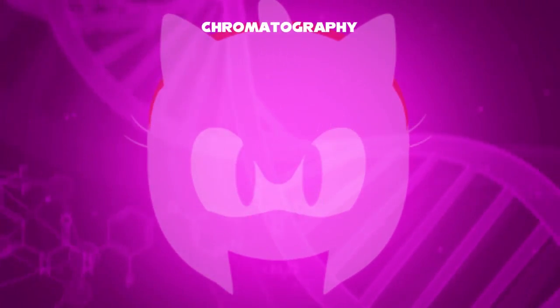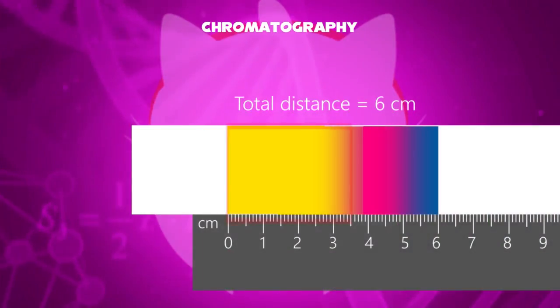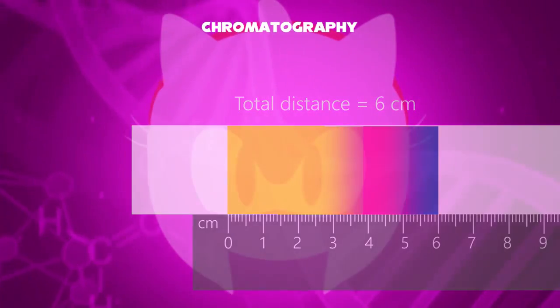Let's go back to the measured values. Distance traveled by yellow is 3.5 centimeters. Magenta traveled a distance of 4.5 centimeters, and cyan traveled a distance of 5.5 centimeters. The entire distance traveled by the solvent front is six centimeters.